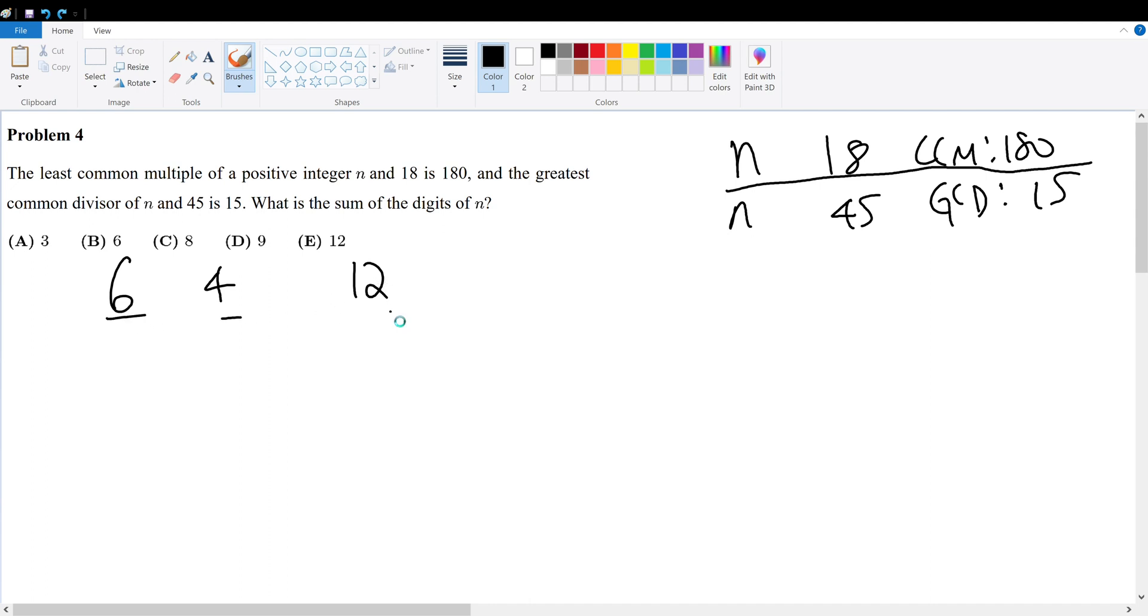Prime factorization should be one thing that I suspect immediately, because prime factorization is used across a lot of number problems. 12 equals 4 times 3, which becomes 2 squared times 3. What is 6? 6 is 2 times 3. 4 is 2 squared. Notice what we know about these terms.